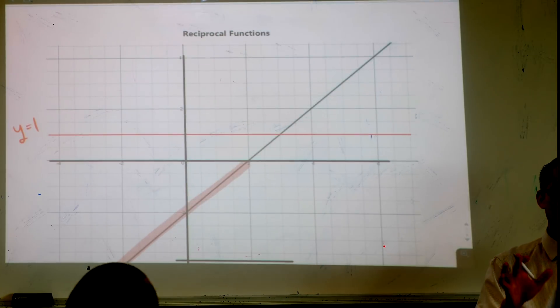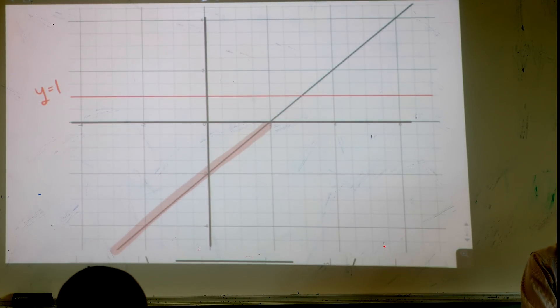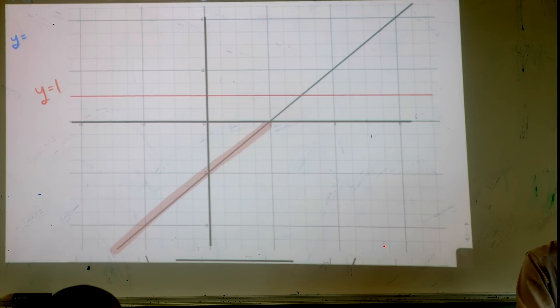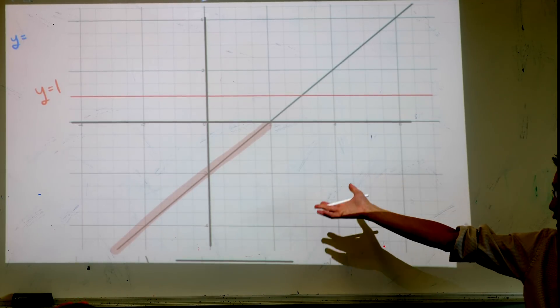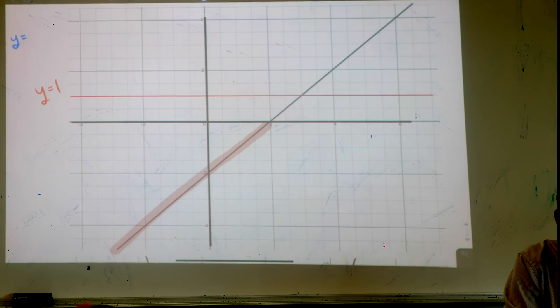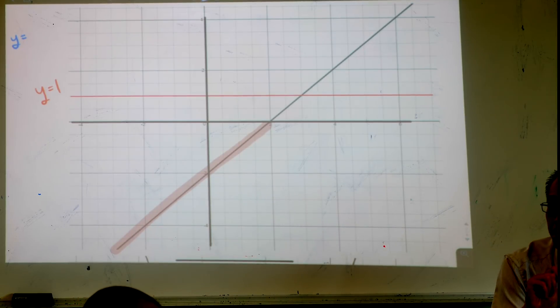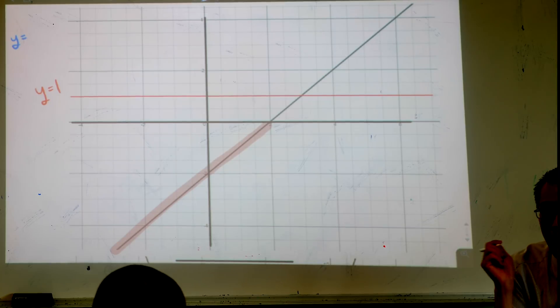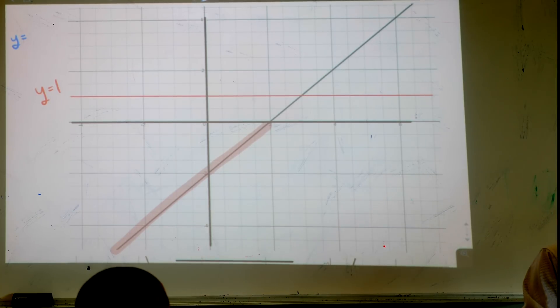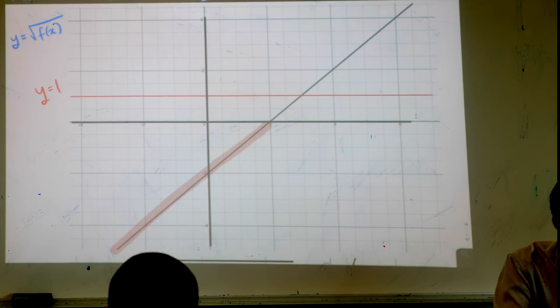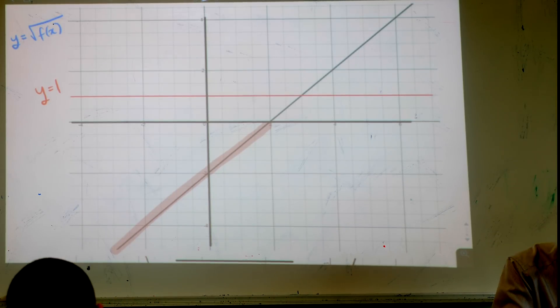We're ready to go now, sorry for the delay. Just to remind you what we're thinking of here is what happens if you know what f of x looks like. So here's a straight line, it's the same one we had a look at yesterday twice. If this is what f of x looks like then what does the square root of f of x look like?